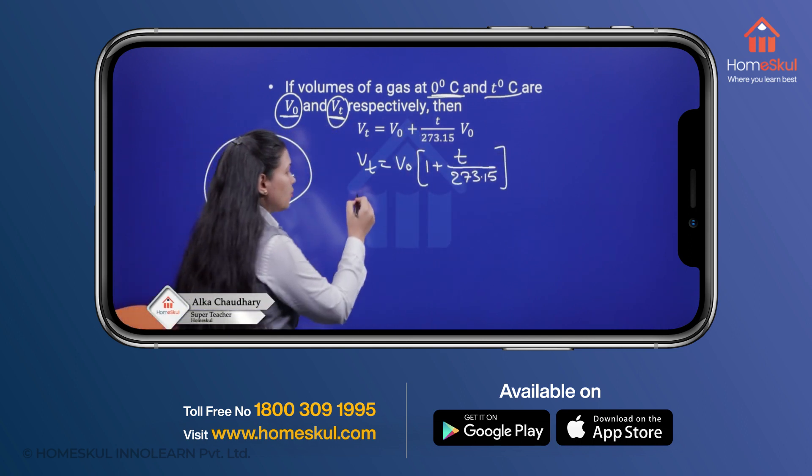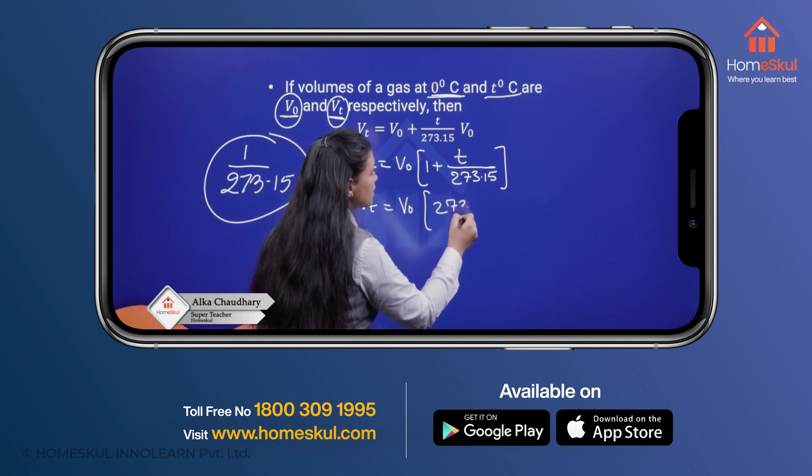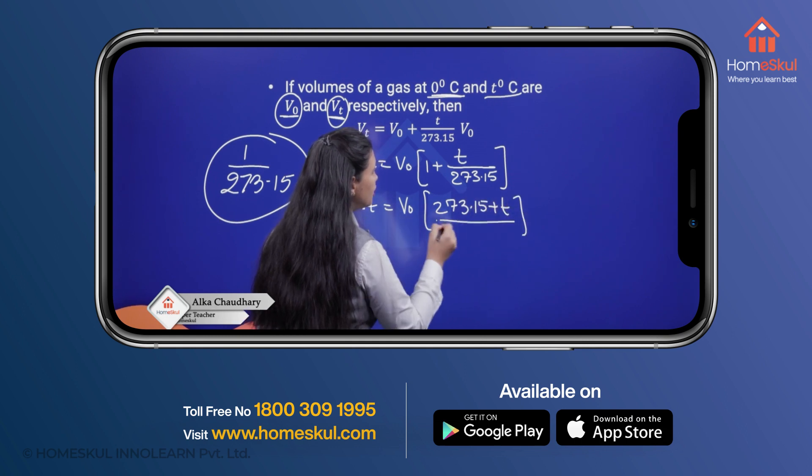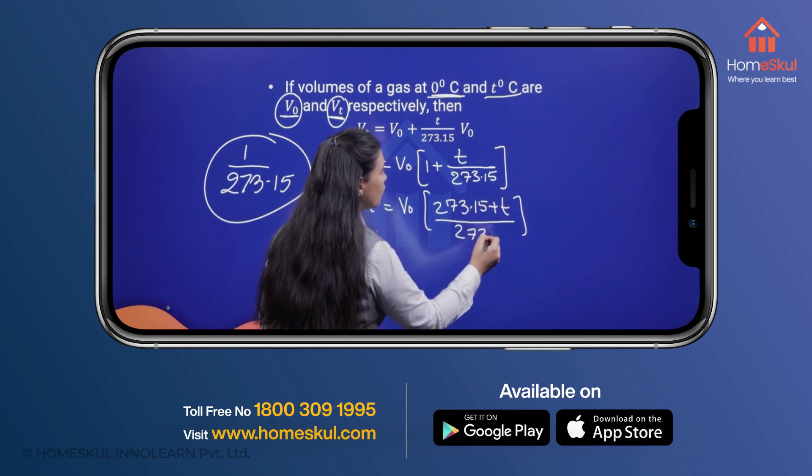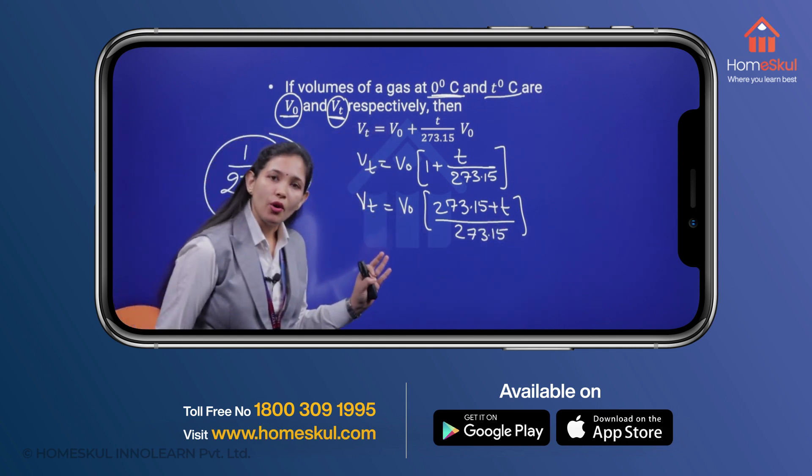Now again if we take 273.15 plus T here divided by 273.15. This is very important here.